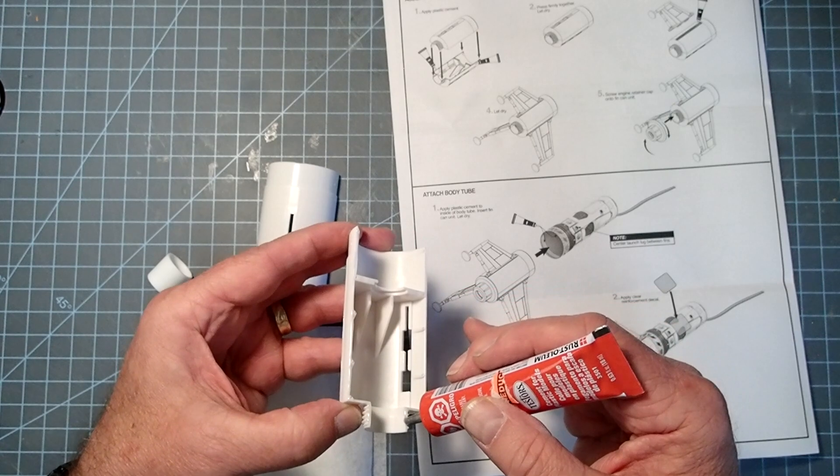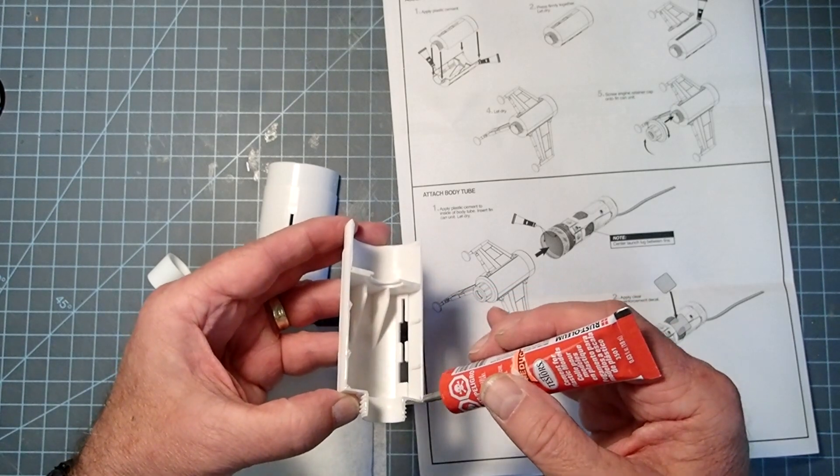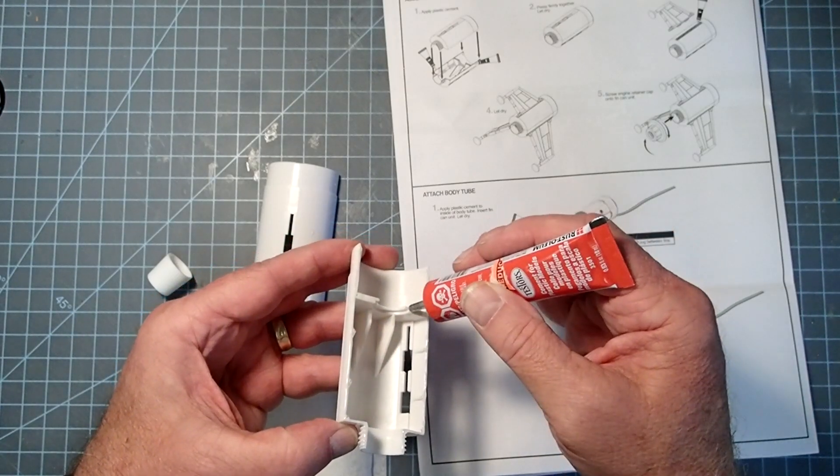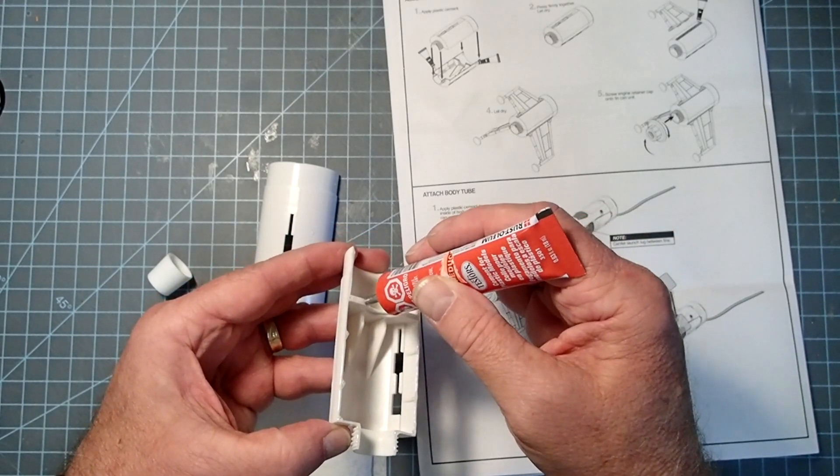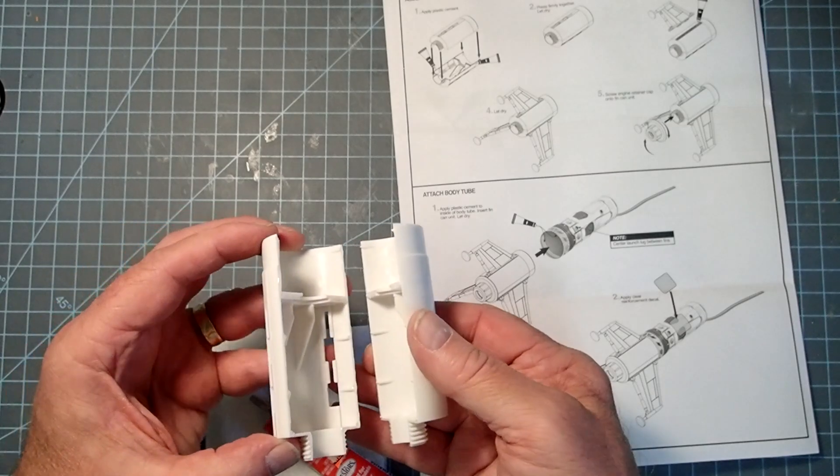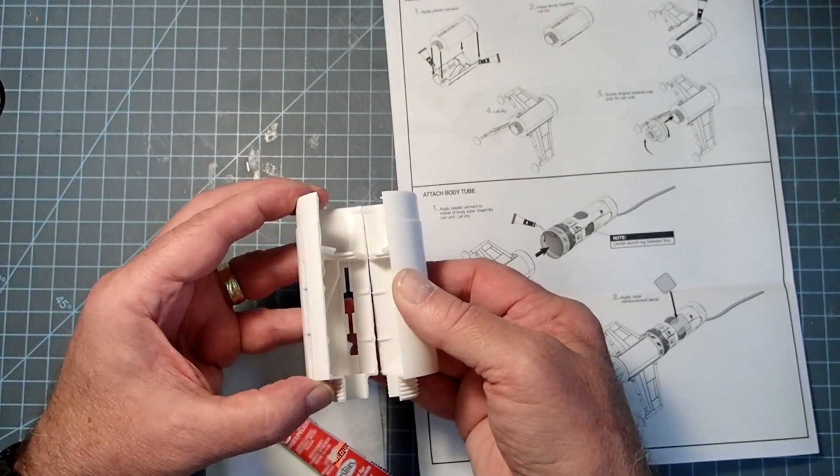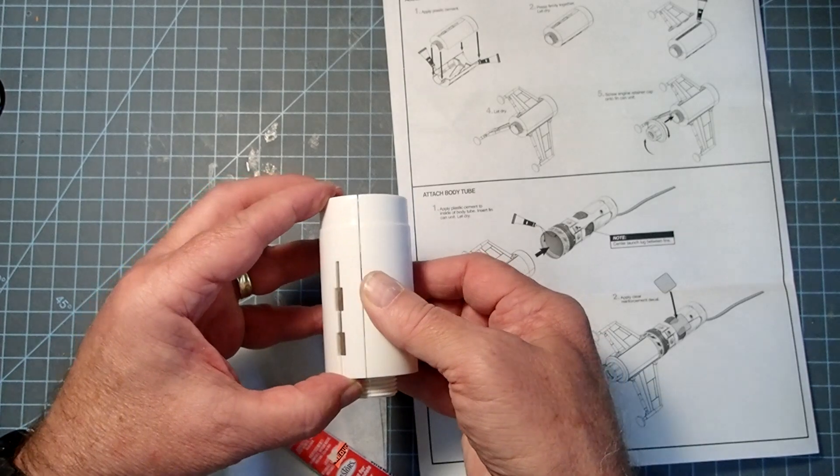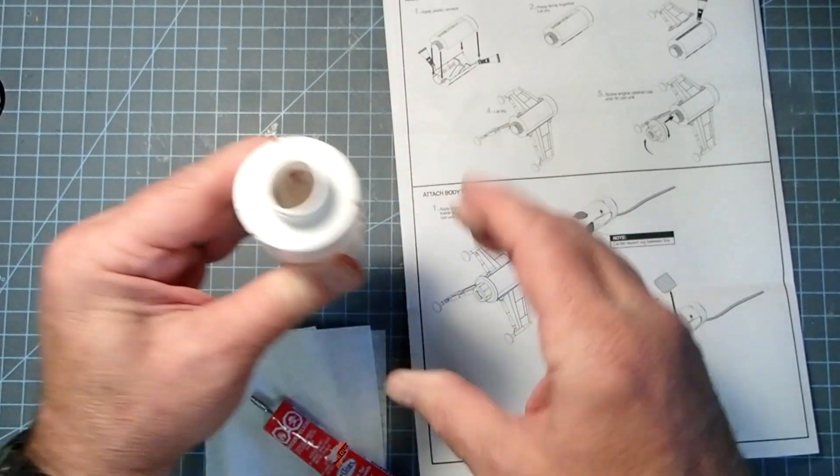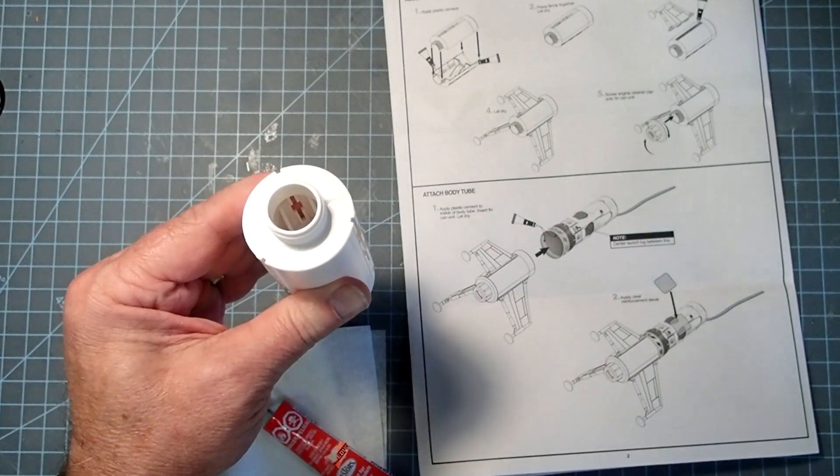You can see this stuff tends to glup when you least expect it. Don't use a lot, we just want a thin film here along the edges. Make sure you hit those little holes that will be for the pegs. And a very sparse amount on the threads. Then we're going to put these two together, putting the little pegs into the little holes. And then you're just going to hold that for about a minute while it dries.